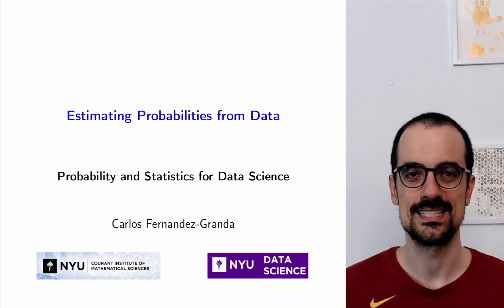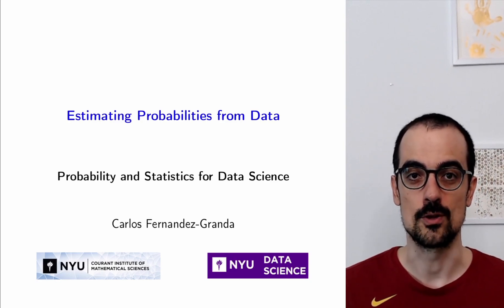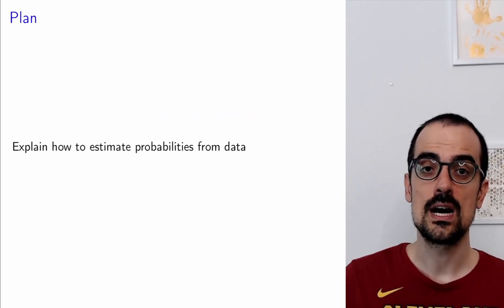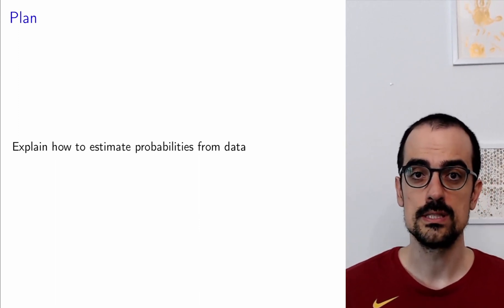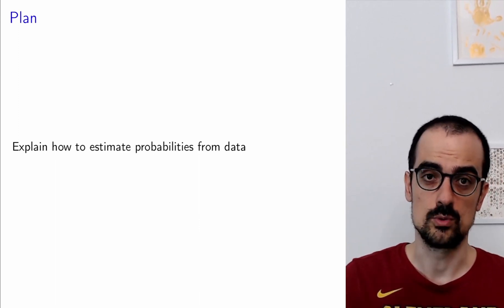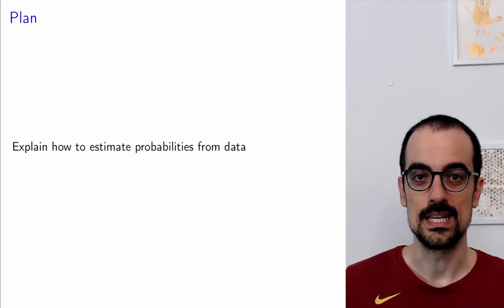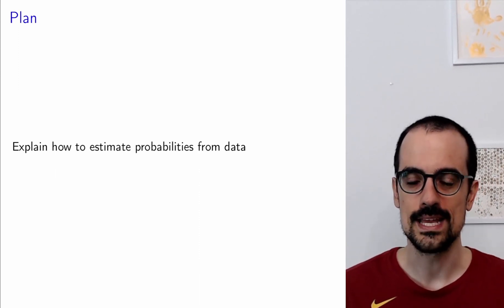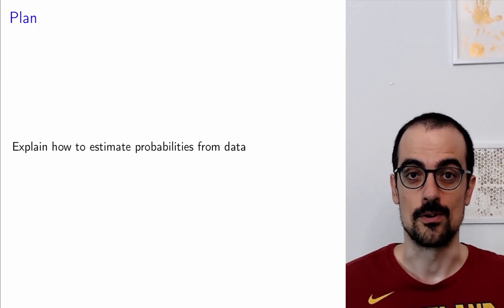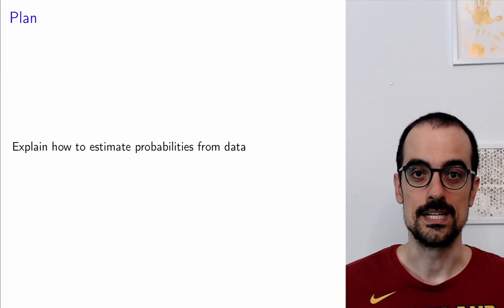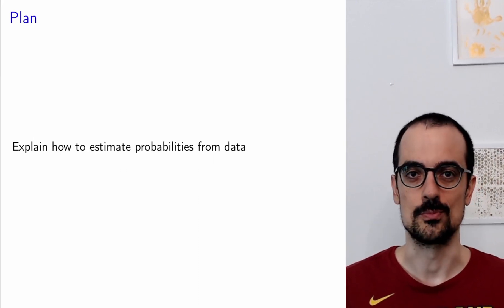Hello everyone. Welcome to Probability and Statistics for Data Science. Today we're going to explain how to estimate probabilities from data. Up to now we have defined probability and conditional probability and all their properties, and we have to know those properties in order to manipulate these objects in a mathematically correct way. But equally important is where do these probabilities come from? Today we're going to explain how to use data to estimate probabilities and conditional probabilities.